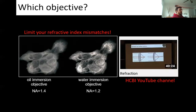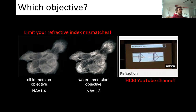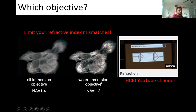Regarding objective choice — remember what refractive index your sample is in. A live sample in media is in a refractive index similar to water, around 1.33. Using an oil immersion objective with oil at refractive index 1.52 will cause severe spherical aberration and significant signal loss. In that situation, a water immersion objective, a silicon oil immersion objective, or one with a correction collar is much better. For more detail, watch the refraction video on our YouTube channel from a previous lunch-and-learn.